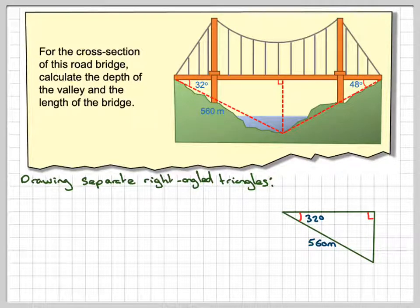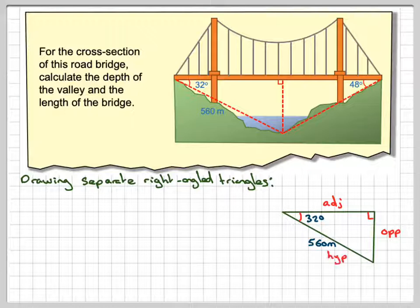So labelling the sides, this one side here will be opposite, this side here would be adjacent, and this would be the hypotenuse. Remember adjacent's next to the angle, opposite is opposite the angle, hypotenuse is the longest side of a right-angled triangle. Now, here this will give me the depth, and this will give me part of the length of the bridge.